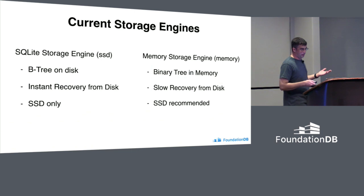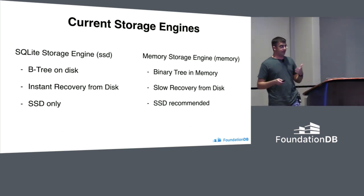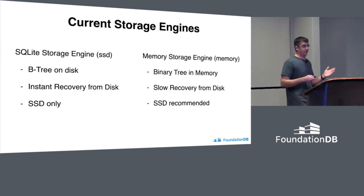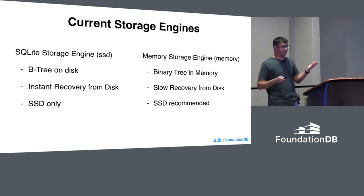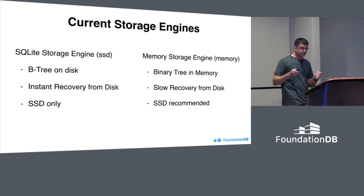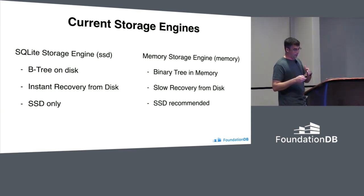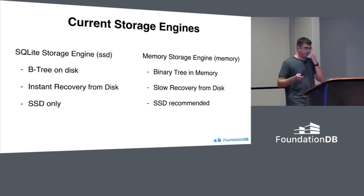Our current storage engines — there are two of them: SSD and memory. The SSD engine is based on SQLite, so it's a B-tree on disk, which has the nice property of giving you instant recovery on a cold start, and as its name implies, you're supposed to use it only on SSDs. On the right, we have the memory storage engine, which despite its name does persist data to disk. It exists essentially as a binary tree in memory, and its on-disk structure is a rolling log of mutations and snapshots of keys and values from the in-memory structure. As a result, it has a slow recovery time from disk. We recommend using SSDs for the memory storage engine, but you could probably get away with using spinning disks.